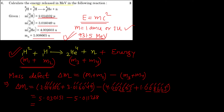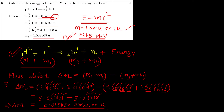Subtracting: 5.030151 − 5.011268 = 0.018883 u. So the mass defect Δm = 0.018883 u (or AMU, as given in the question).